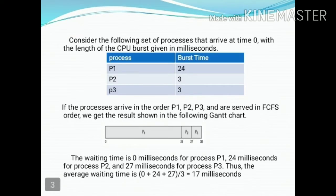For example, P1, P2, and P3 are three processes. P1 has a burst time of 24 ms, P2 is 3 ms, and P3 is 3 ms. All three processes arrive at the ready queue at time zero. Using First Come First Serve scheduling, we need to calculate the average waiting time.